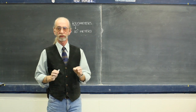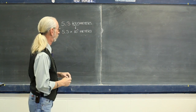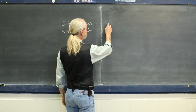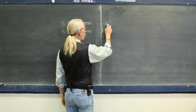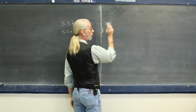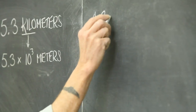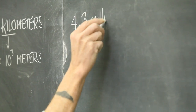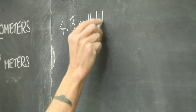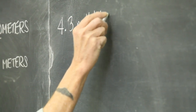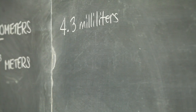Similarly, four point three millimeters means the same thing as four point three milliliters — showing again how the prefix milli can be swapped in and out.